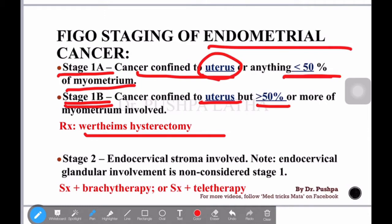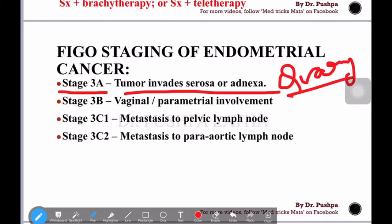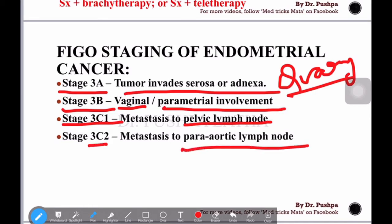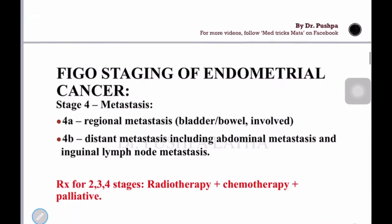Stage 2 is about endocervical stroma involvement. Stage 3a is about tumor invading the serosa or adnexa — you can memorize this as tumor spreading to the ovary. Stage 3b is about vaginal and parametrial involvement. Stage 3c1 is metastasis to the pelvic lymph nodes, and stage 3c2 is metastasis to the para-aortic lymph nodes.